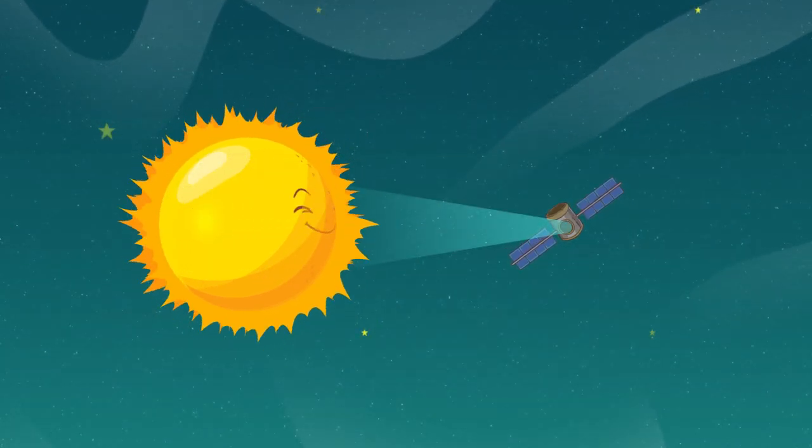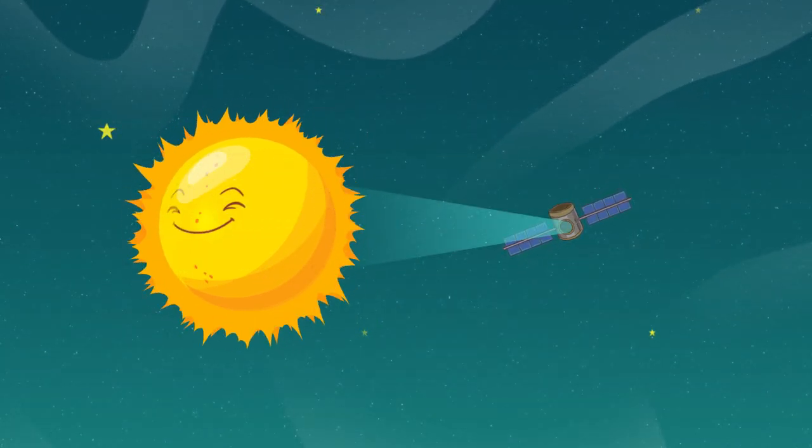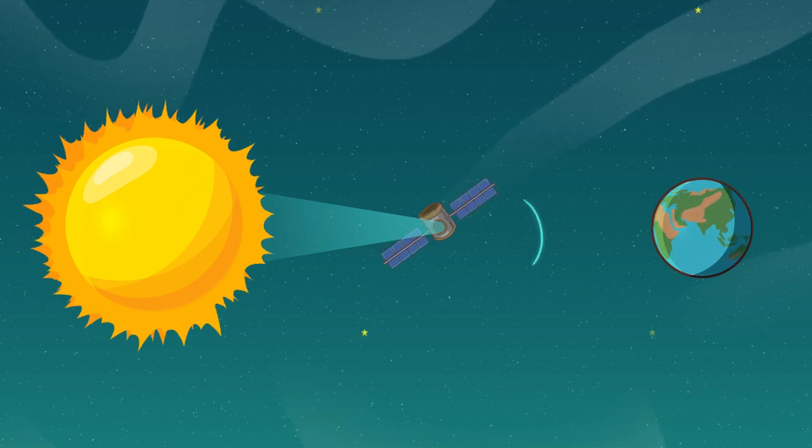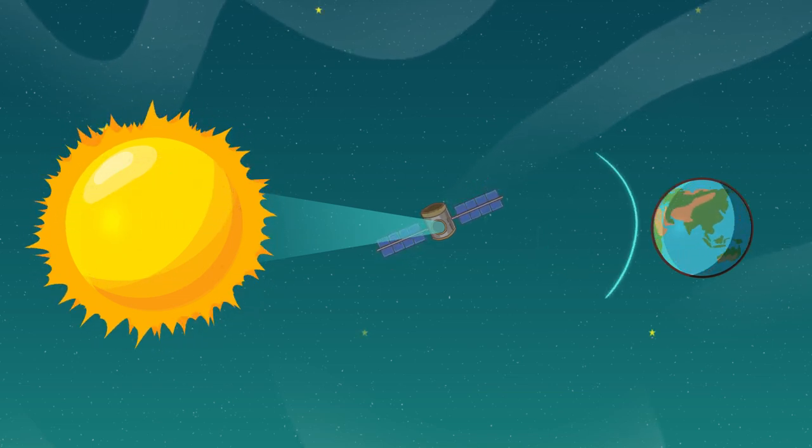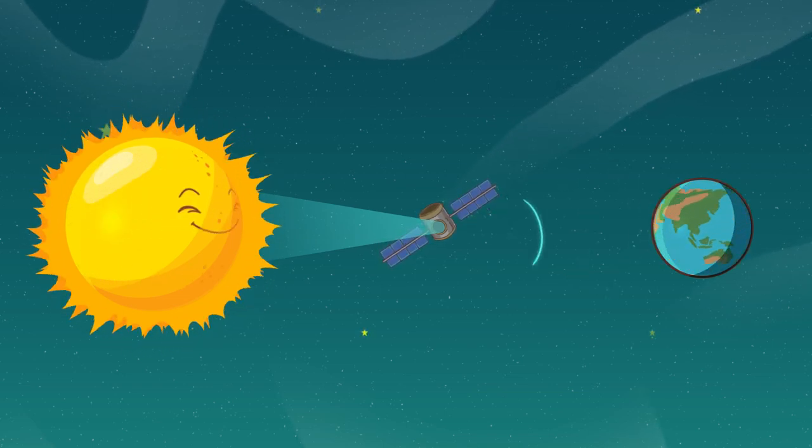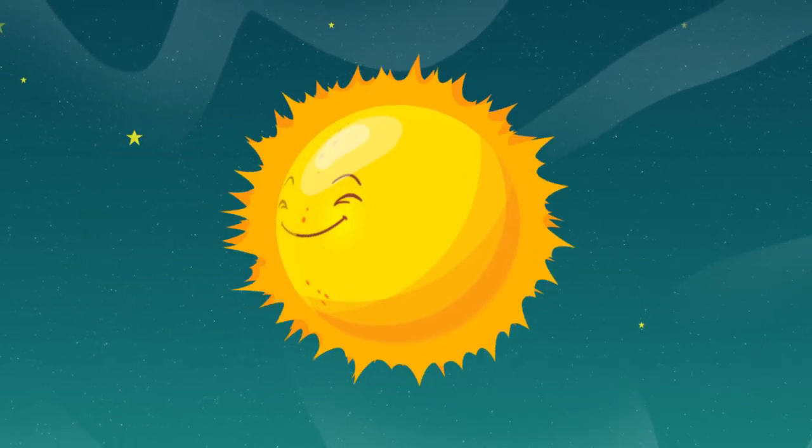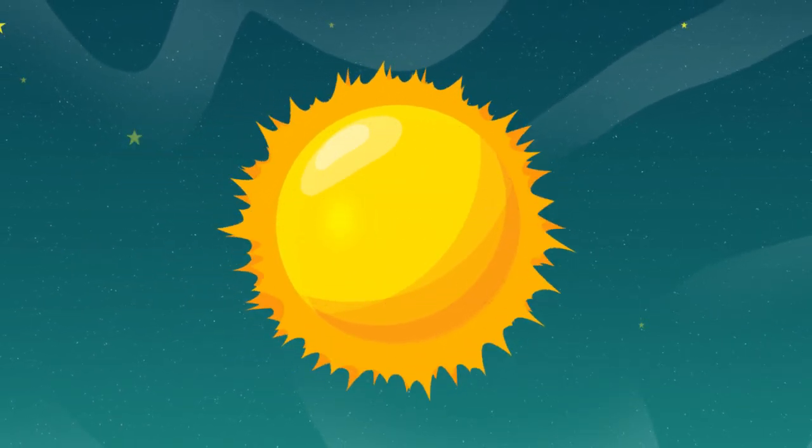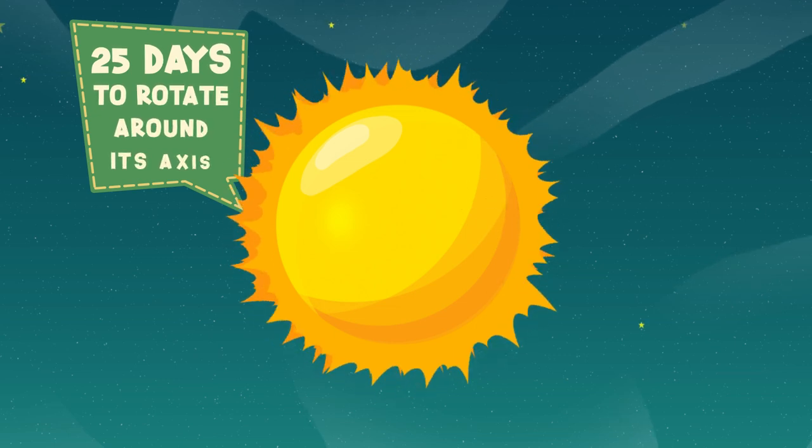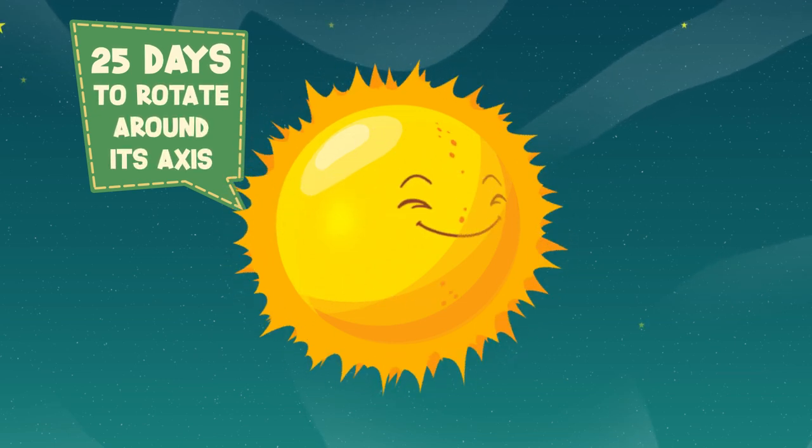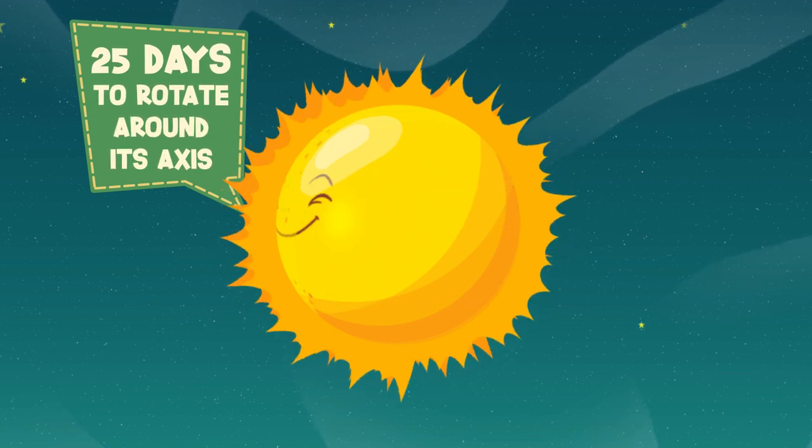The rotation of the Sun about its own axis can be proved with the help of an equipment that projects the image of the Sun on the tabletop so that one can examine the image of the Sun without being blinded. It is noticed that the Sun has spots which complete a circular motion once every 25 days, i.e., the Sun takes approximately 25 days to rotate around its axis.